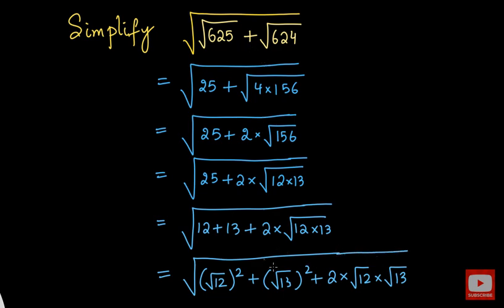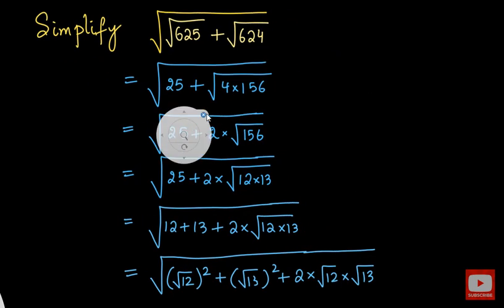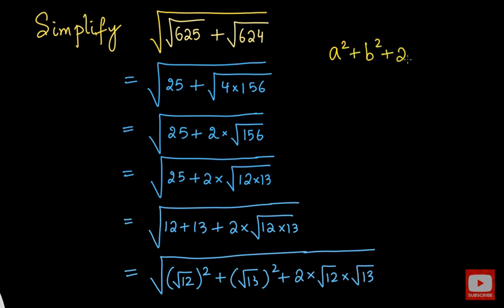Now why have I done all this and brought this expression into this form? Because you can see that the expression inside the square root resembles something we already know. What is that? Yes, it resembles the algebraic identity a plus b whole square. So it is of the form a² plus b² plus 2ab. This root 12 square plus root 13 square plus 2 into root 12 into root 13 is exactly of this form, and we know this equals a plus b whole square. This is the reason why I did this.